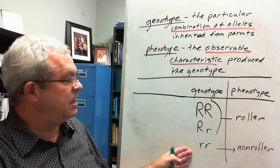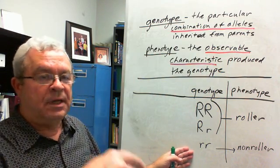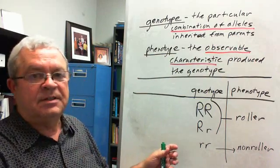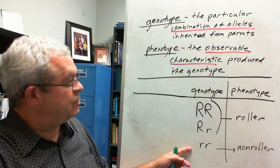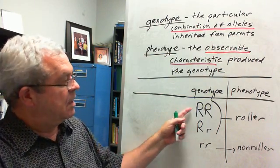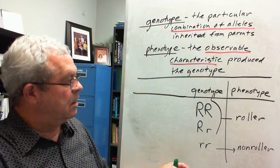We're using tongue rolling as an example. All of us, you, me, all of us in this class are one of these three genotypes. We're either big R big R, big R little r, or little r little r.